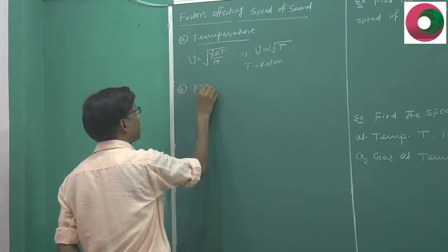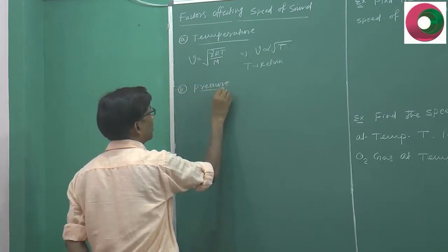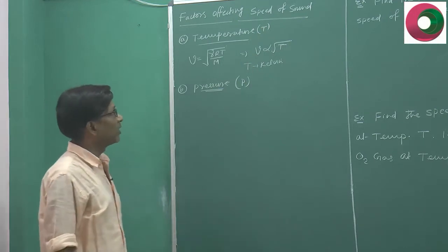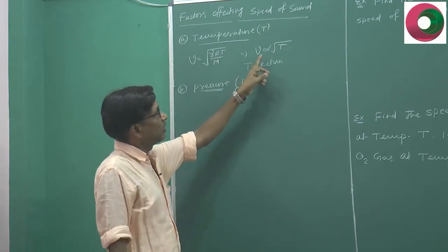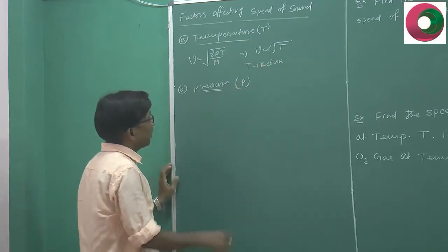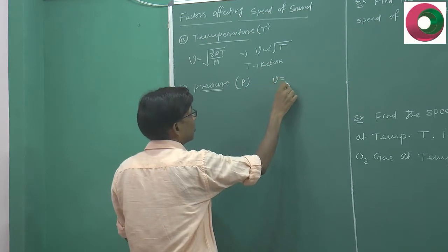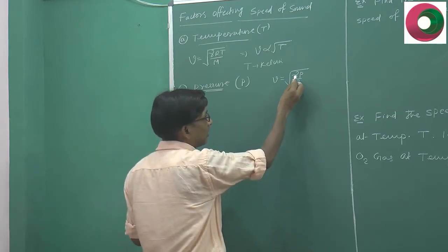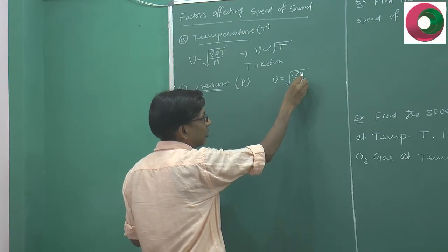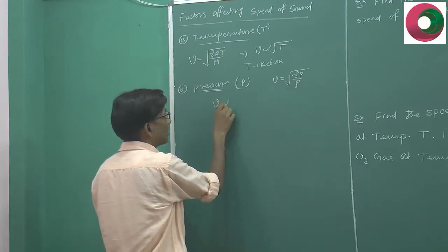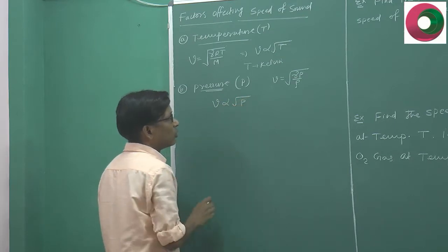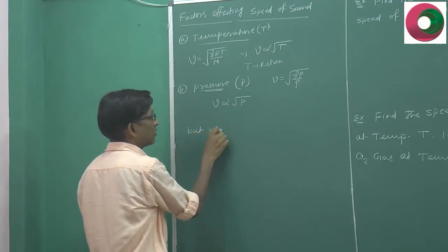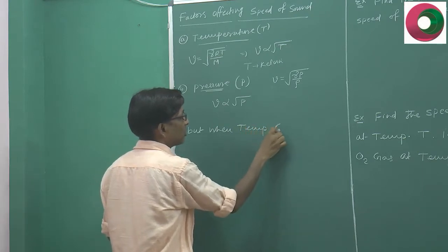The second factor is pressure. Temperature must always be calculated in Kelvin, and speed is directly proportional to the square root of temperature. From the pressure perspective, velocity can be written as V = √(γP/ρ). If density is kept constant and only pressure varies, then V should be directly proportional to the square root of pressure. But when temperature is constant...